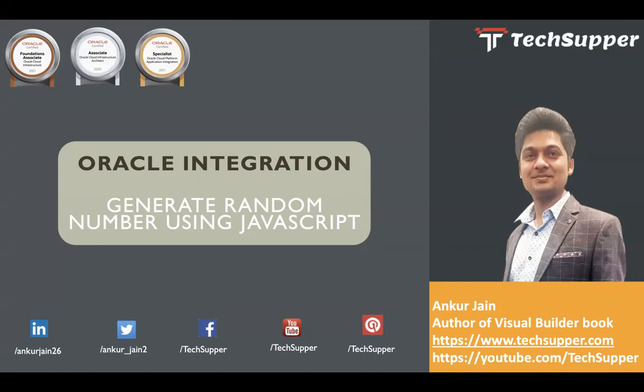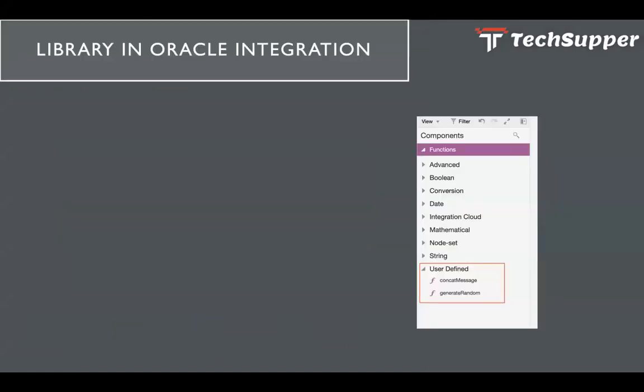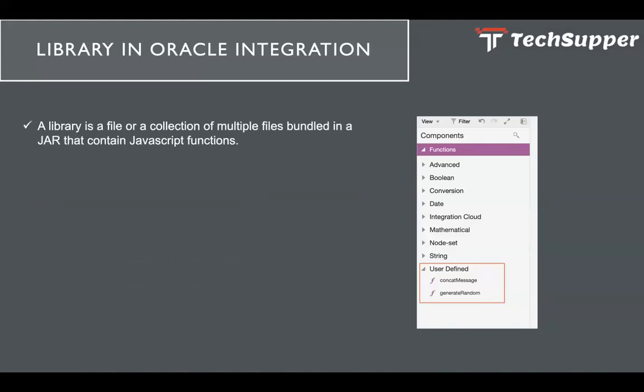Let's get started. First of all, let's understand what a library is in Oracle Integration. A library is a file, or a collection of multiple files bundled in a JAR, that contains JavaScript functions. A library is essentially a collection of JavaScript functions or a single JavaScript file which has the functions.